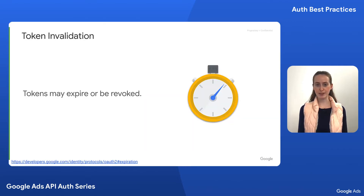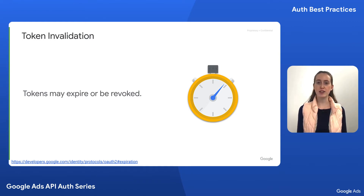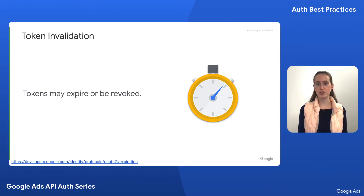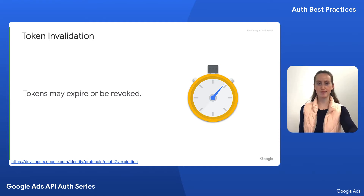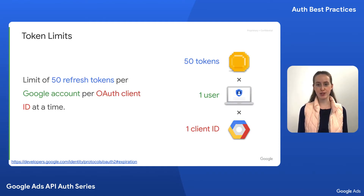First, tokens expire. Access tokens are short-lived, but if you're using a client library, you don't need to worry about refreshing them. However, refresh tokens can also expire or be revoked. Users may revoke refresh token access at any time. Refresh tokens expire every seven days for external users on applications in testing mode, and can also expire if unused for six months. Additionally, there's a limit of 50 refresh tokens per user per OAuth client ID — if the limit is reached and a new token is generated, the oldest token will be invalidated.